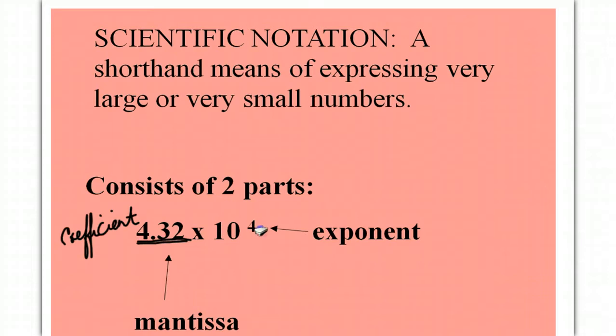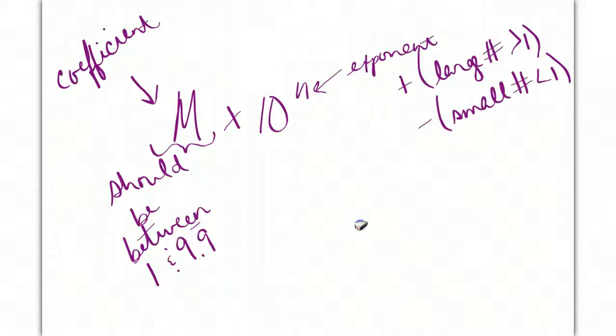Then we have times 10 and an exponent. The exponent is going to let us know how large or small the number is. The exponent can be a positive value, which means it's a large number greater than one, or it can be a negative value, which makes it a small number less than one.